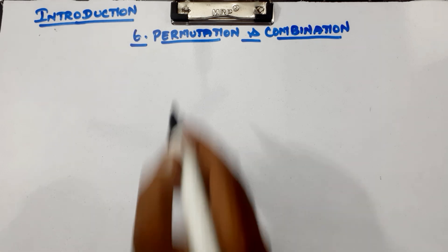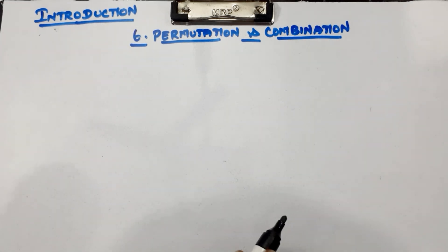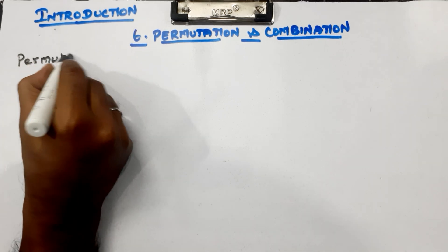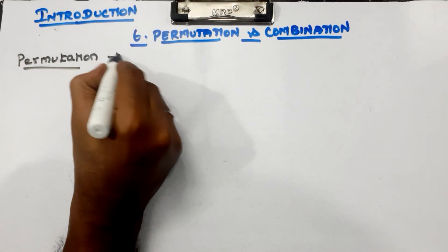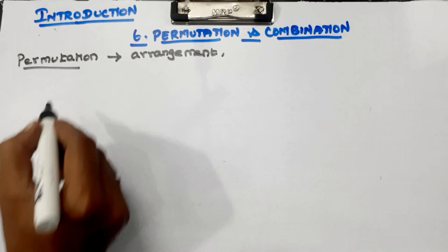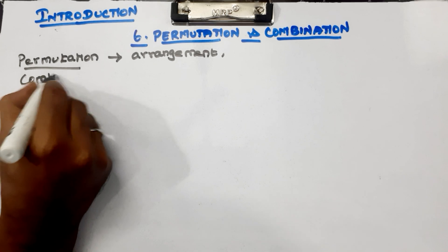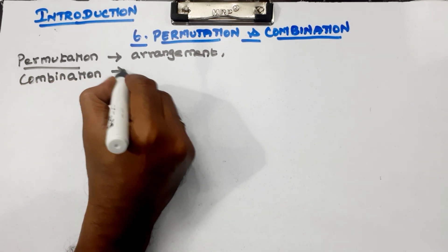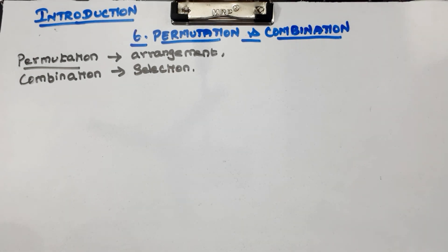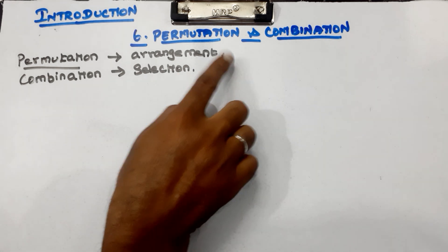What is permutation? What is combination? Permutation means arrangement. Combination means selection. Let's go to a school, let's go to a workshop, let's do a seminar. Let's go to some chairs and arrange them. Arranging things — that is permutation.